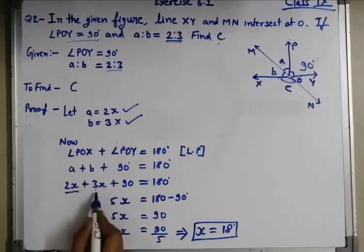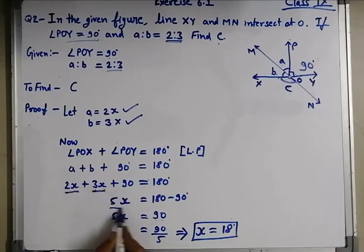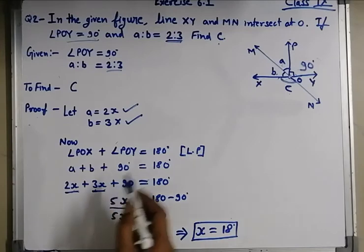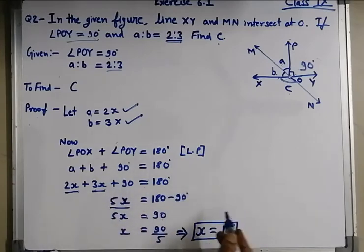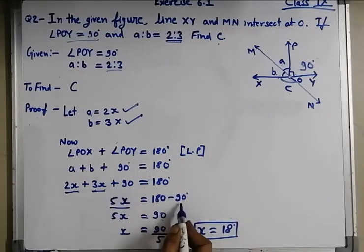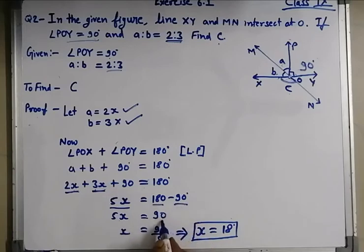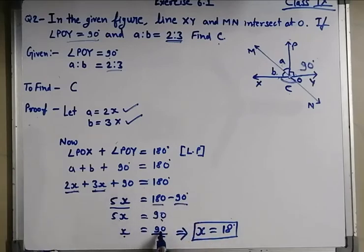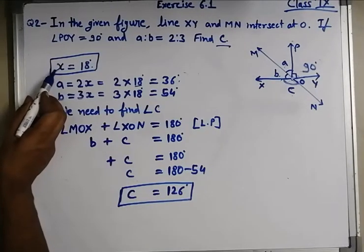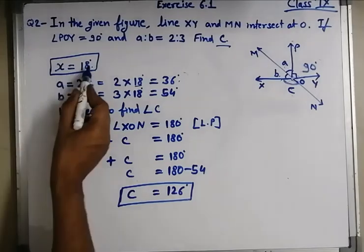Sum of 2x plus 3x is 5x. This 90 will go to the RHS, so it will become minus 90. So 180 minus 90 is 90. So 5x is equal to 90 and x is equal to 90 upon 5. So the value of x is 18 degrees.